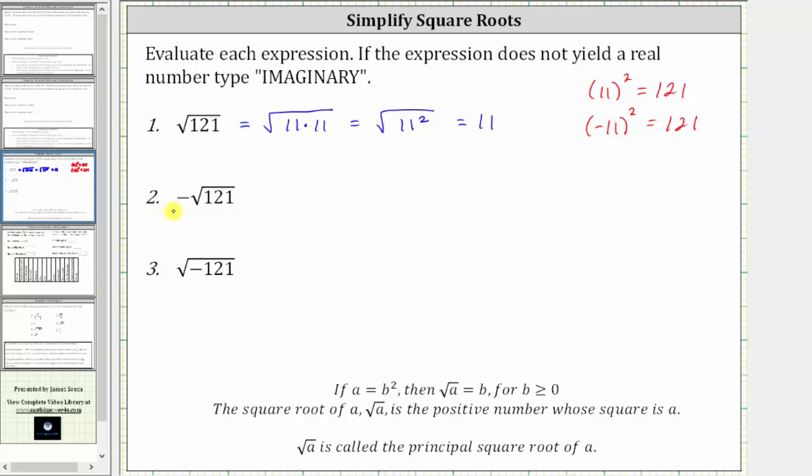For number two, we have negative square root of 121, or the opposite of the square root of 121. And therefore, this simplifies to negative 11, the other square root of 121.